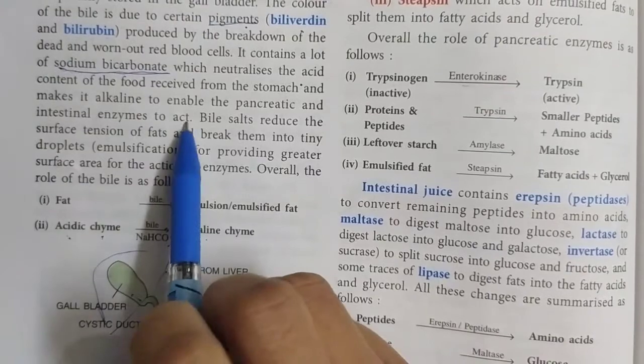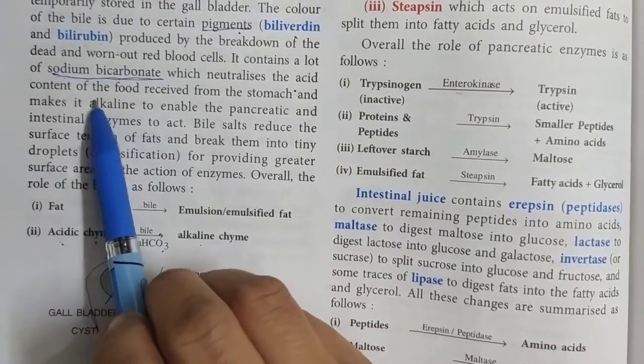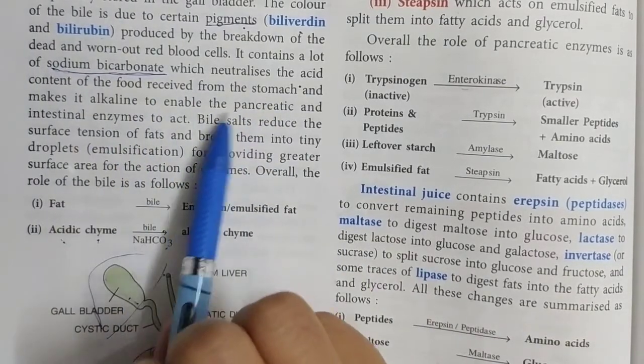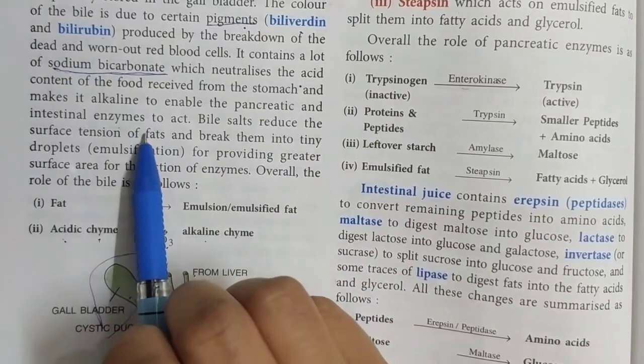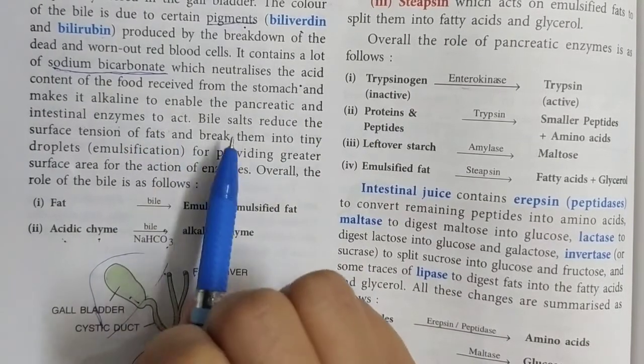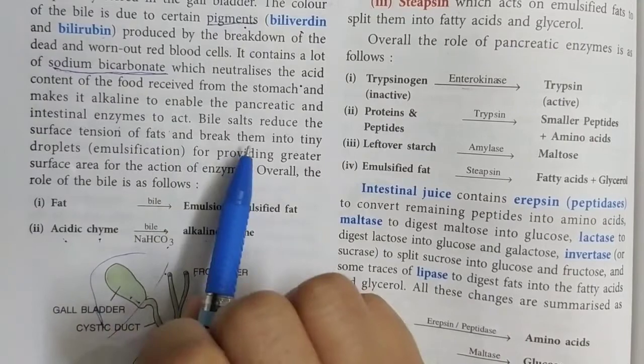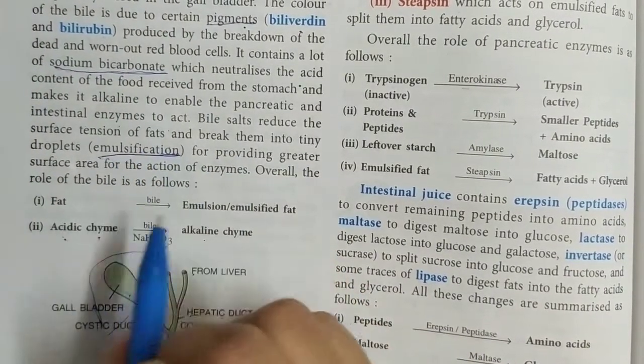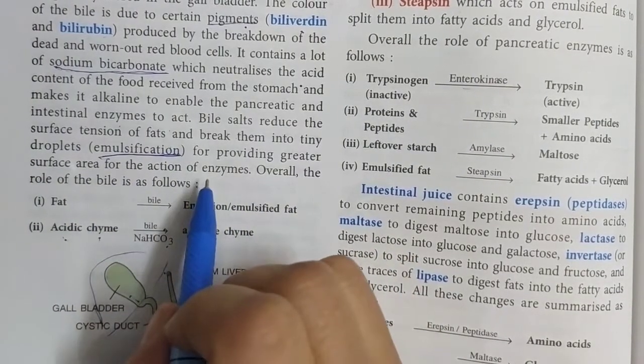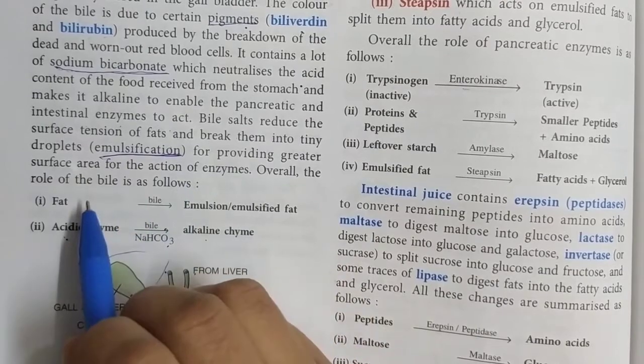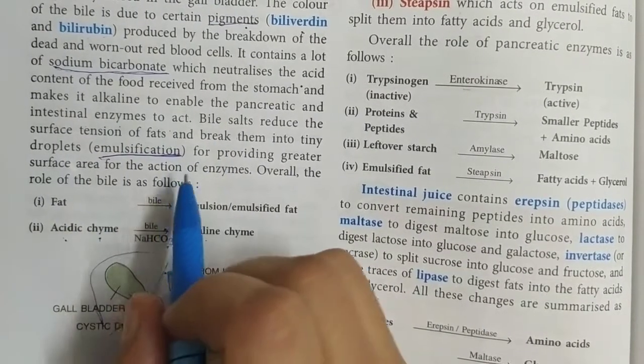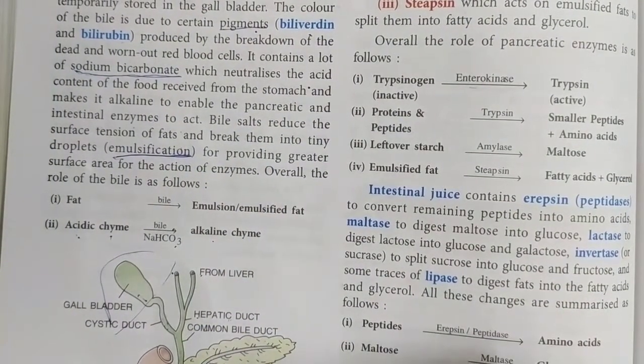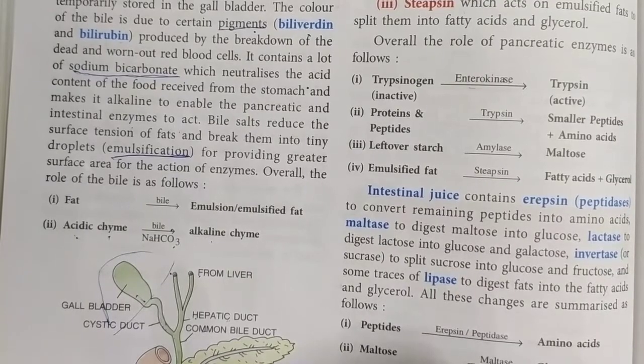So here they have written that bile neutralizes the acid content of the food received from stomach and makes it alkaline to enable the pancreatic and intestinal enzymes to act. Now bile salts reduce the surface tension of fats and break them into tiny droplets. This is known as emulsification, for providing greater surface area for the action of enzymes. When some large thing gets broken down into smaller molecules, surface area will increase, and now enzymes can easily cause the breakdown. So overall reaction is explained here. Now we will discuss about pancreatic juice in the next video.